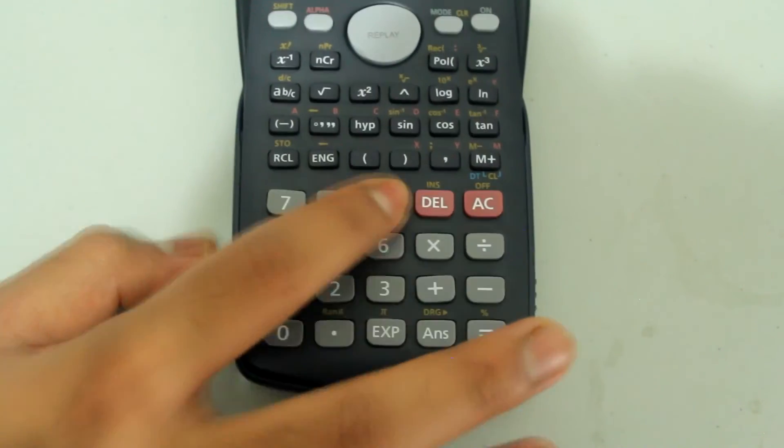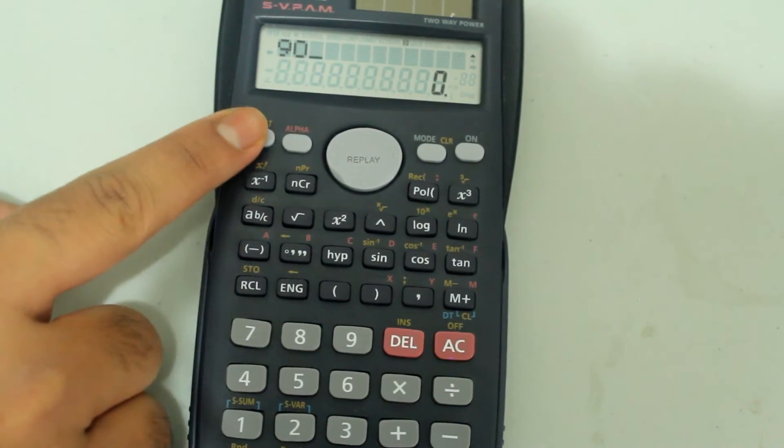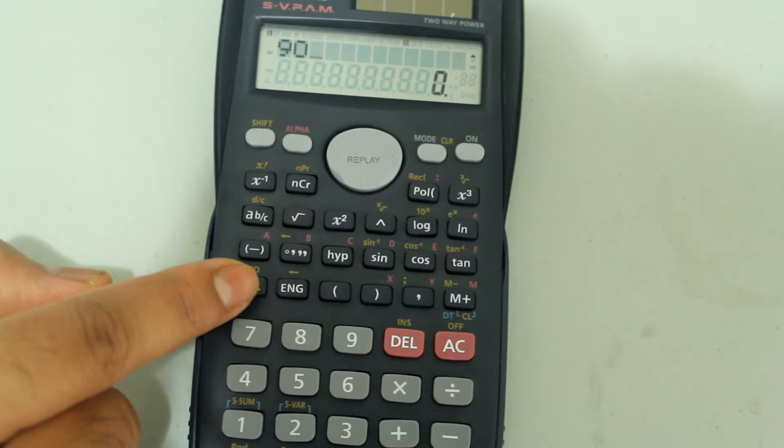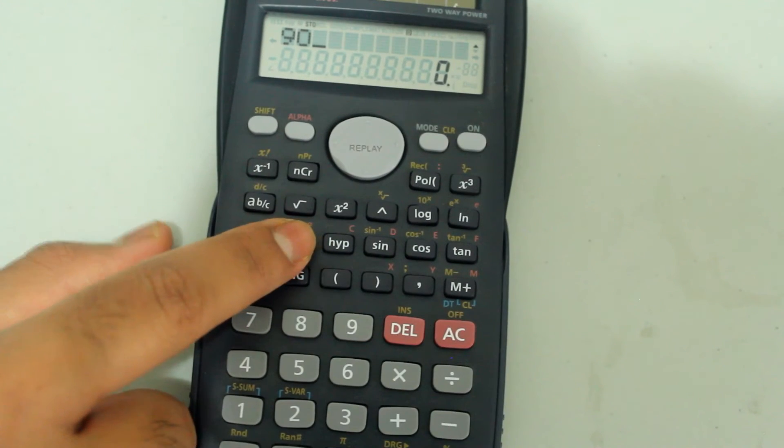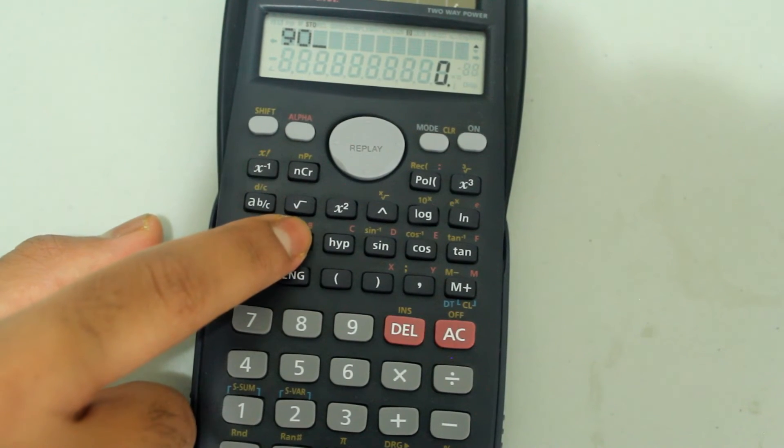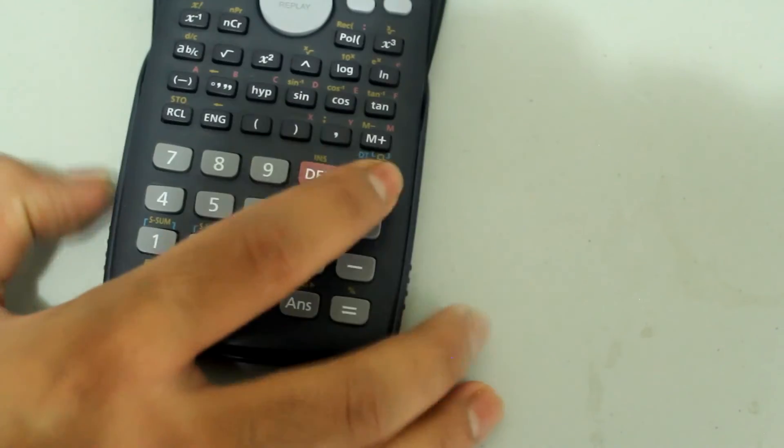I'm just going to clear everything out, type in 90 on the number pad, press shift recall to select store, and then press this button to select B. Now I have 90 set to B. Press equals and clear.